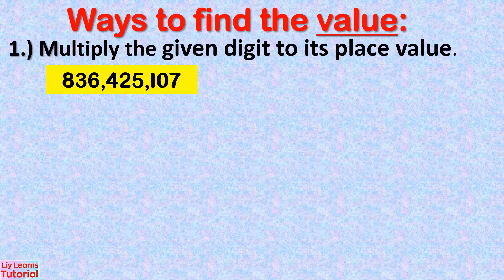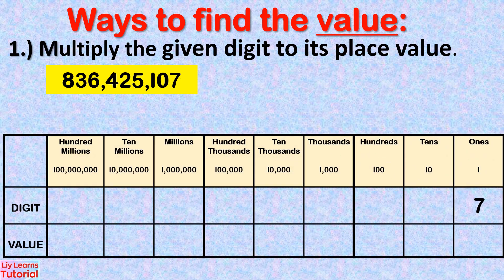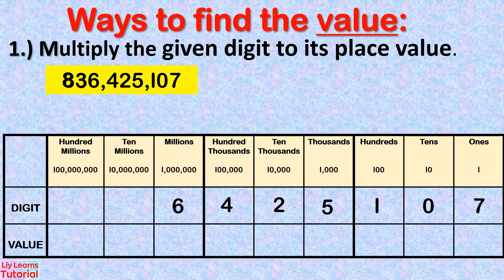First, we multiply the given digits with their place value. In 836,425,107: 7 is in the 1s place, 0 is in the 10s place, 1 is in the 100s place, 5 is in the 1,000s place, 2 is in the 10,000s place, 4 is in the 100,000s place, 6 is in the millions place, 3 is in the 10,000,000s place, and 8 is in the 100,000,000s place.